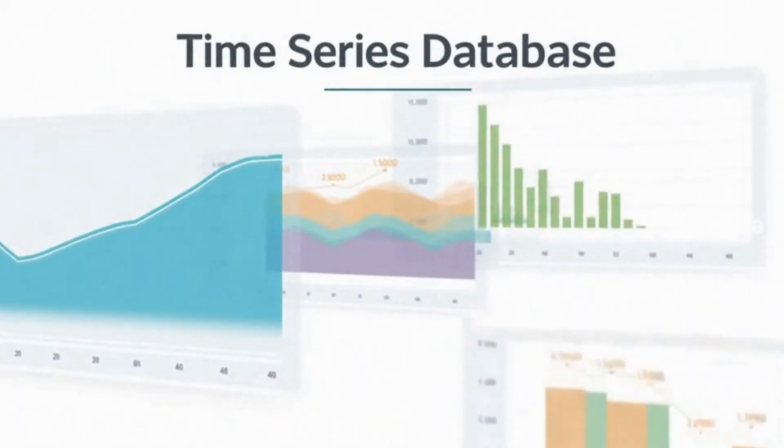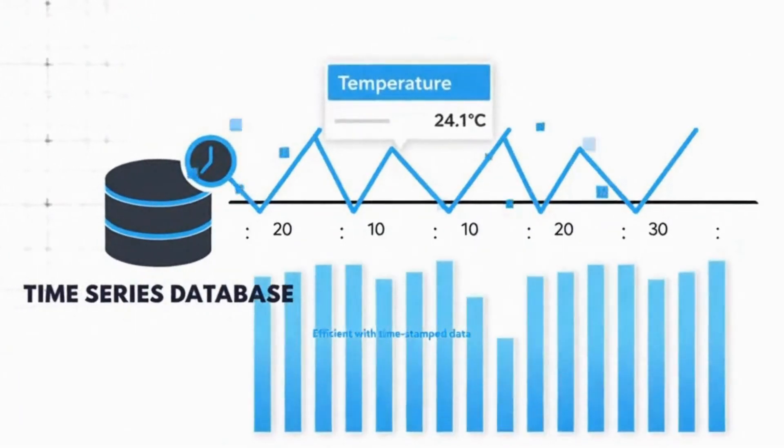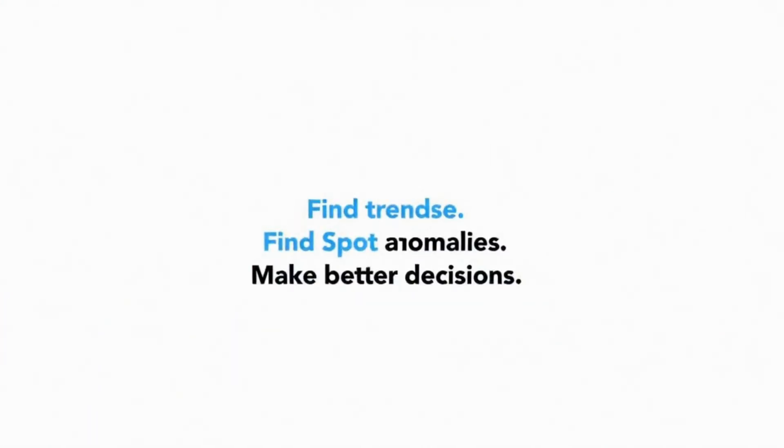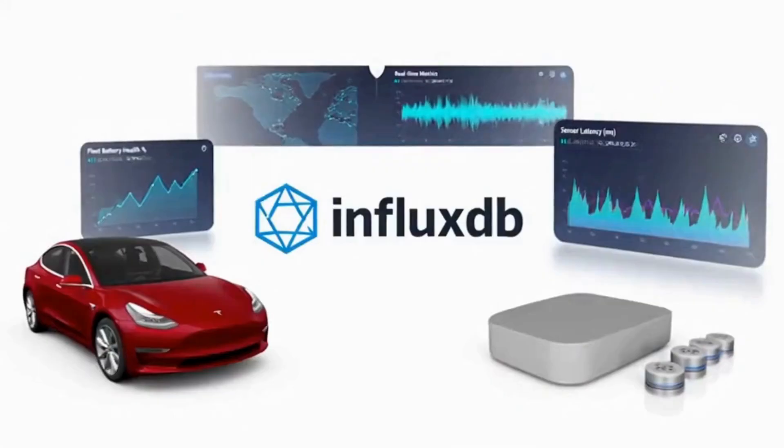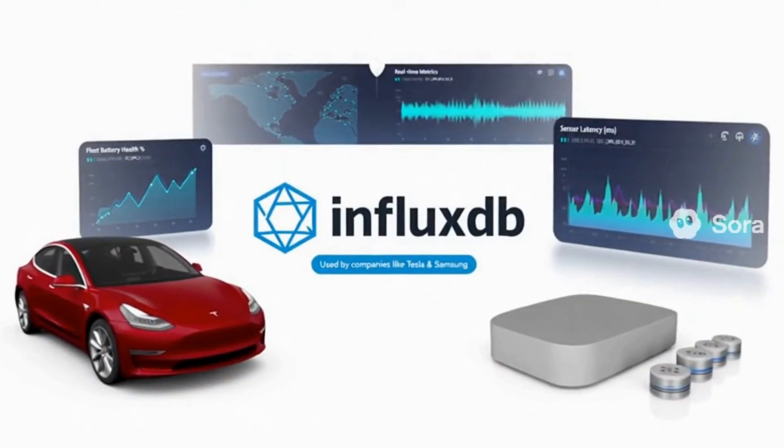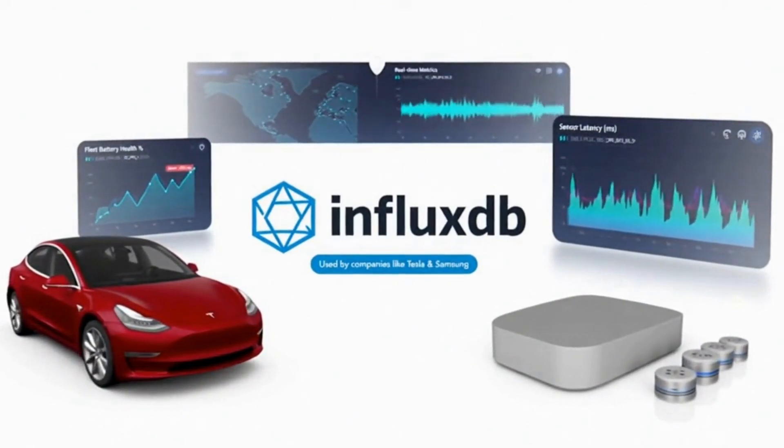What makes them special is their ability to efficiently store and analyze massive amounts of timestamped data, finding trends and patterns over time periods. InfluxDB is a popular example, used by companies like Tesla to monitor their car fleet, and by Samsung to track IoT device performance.